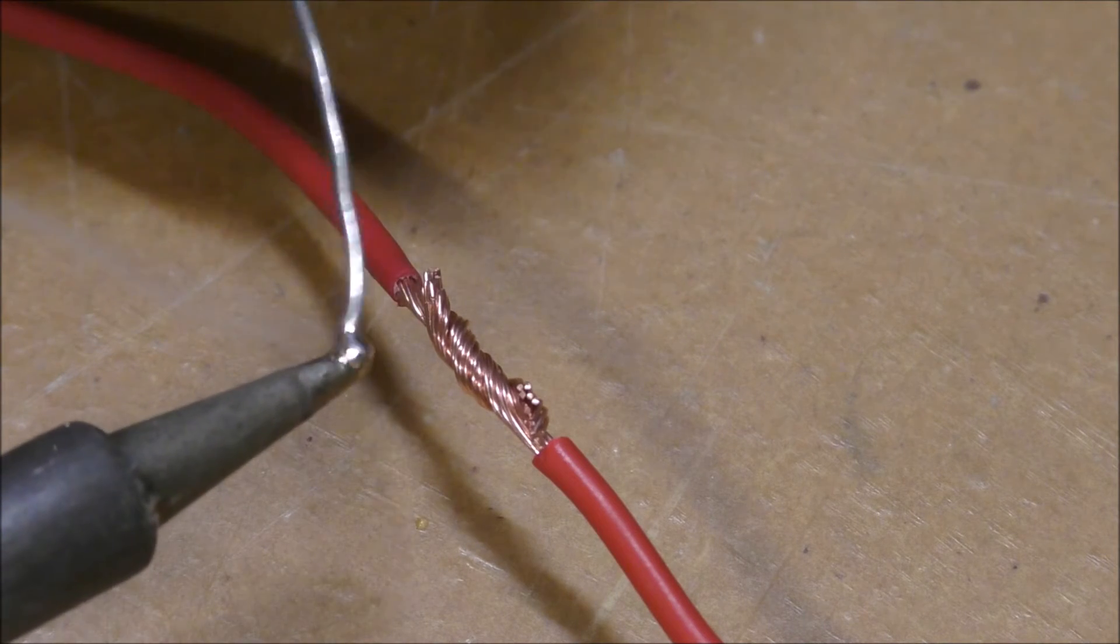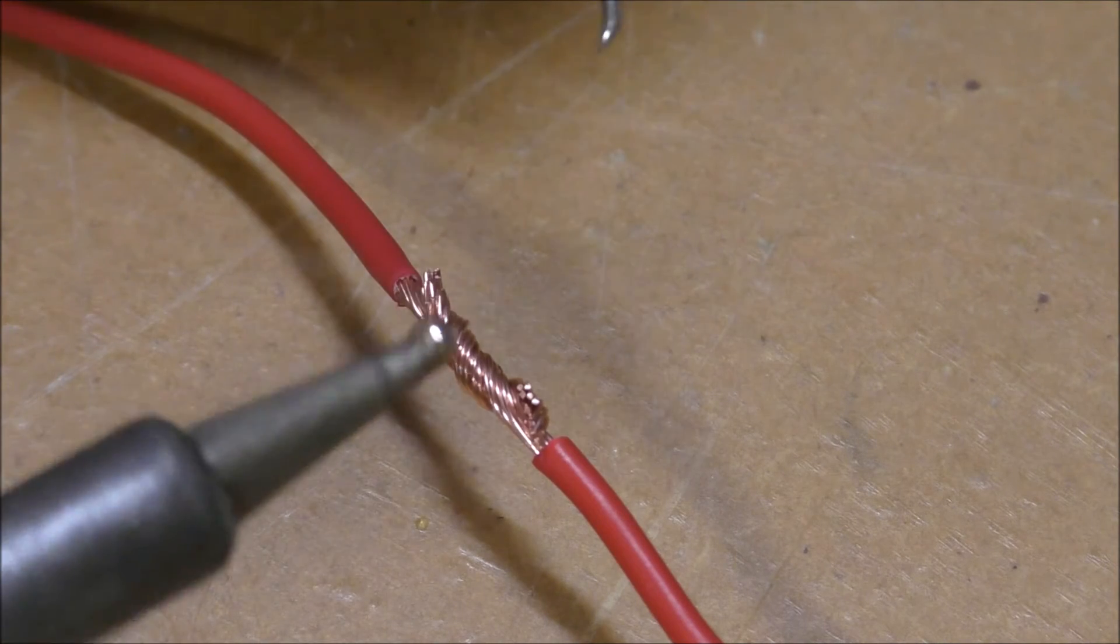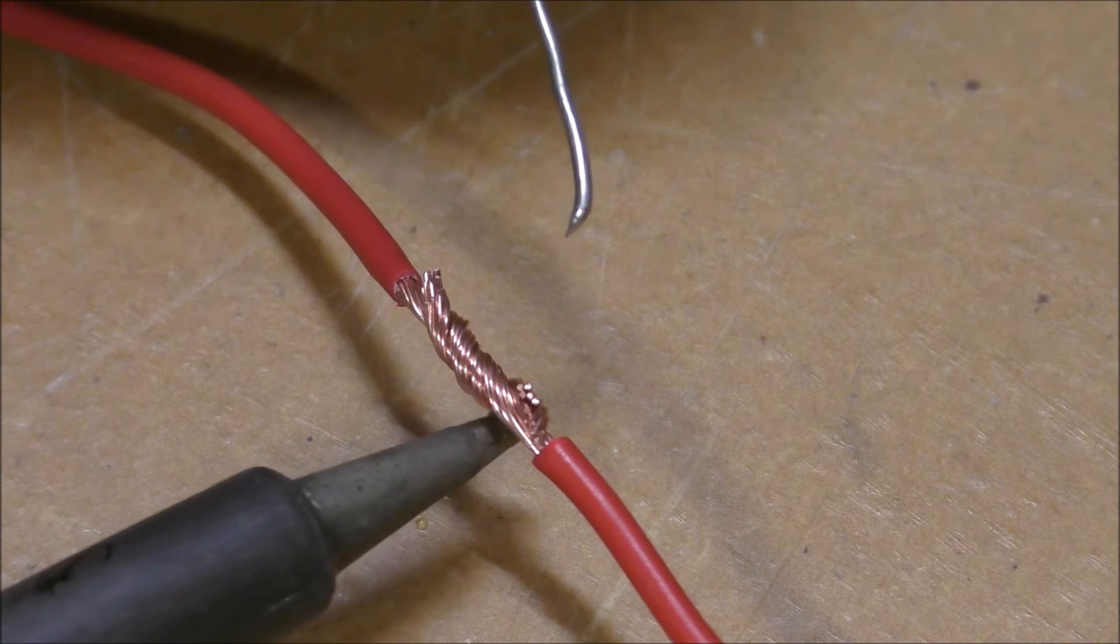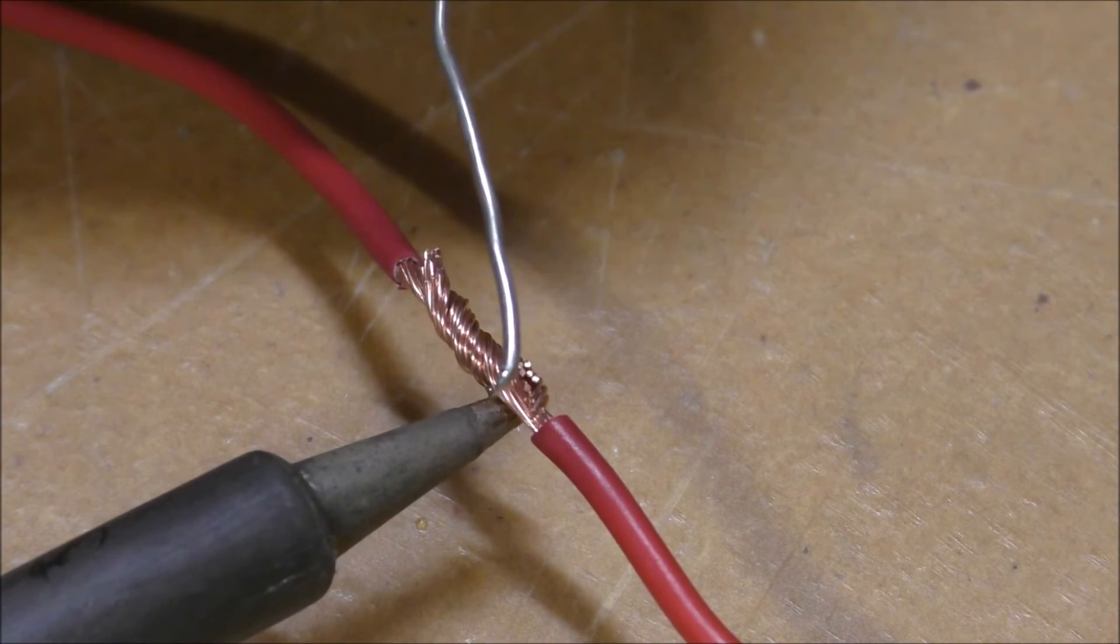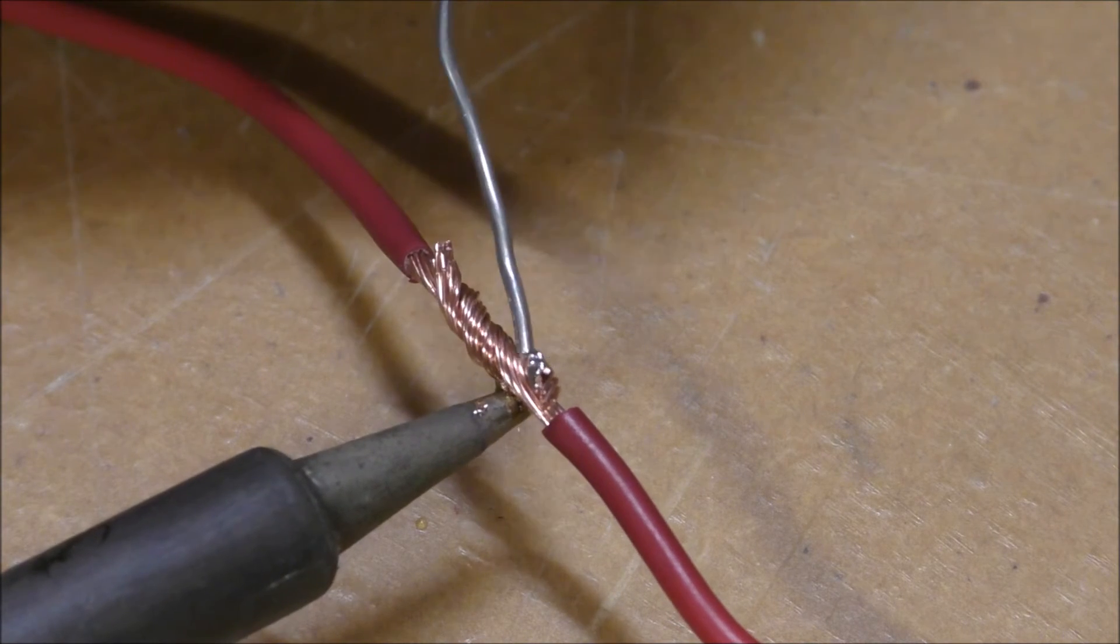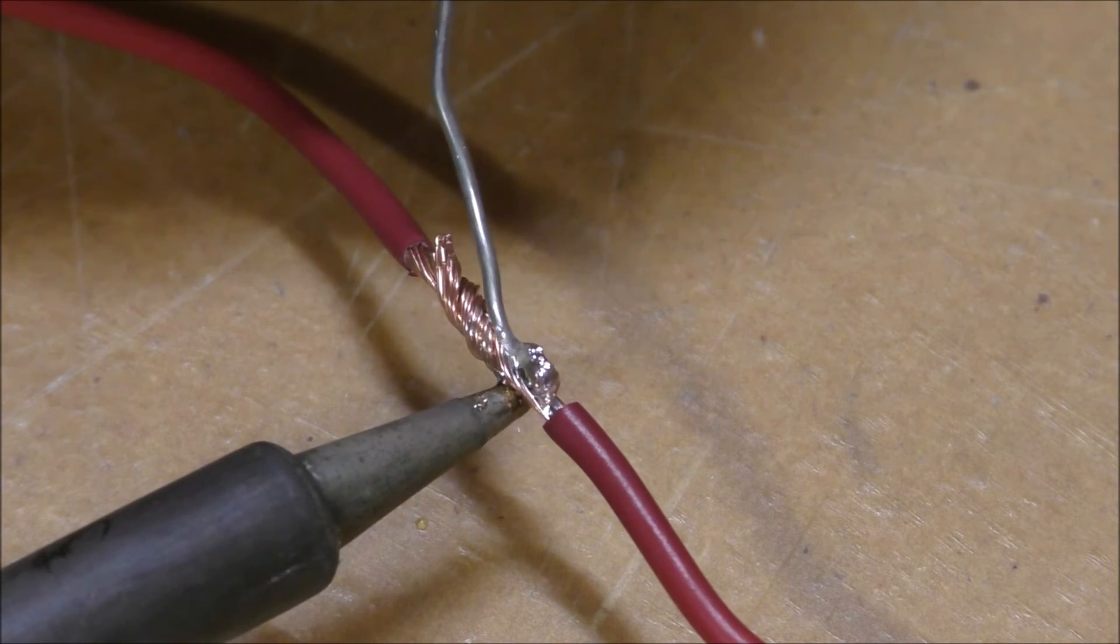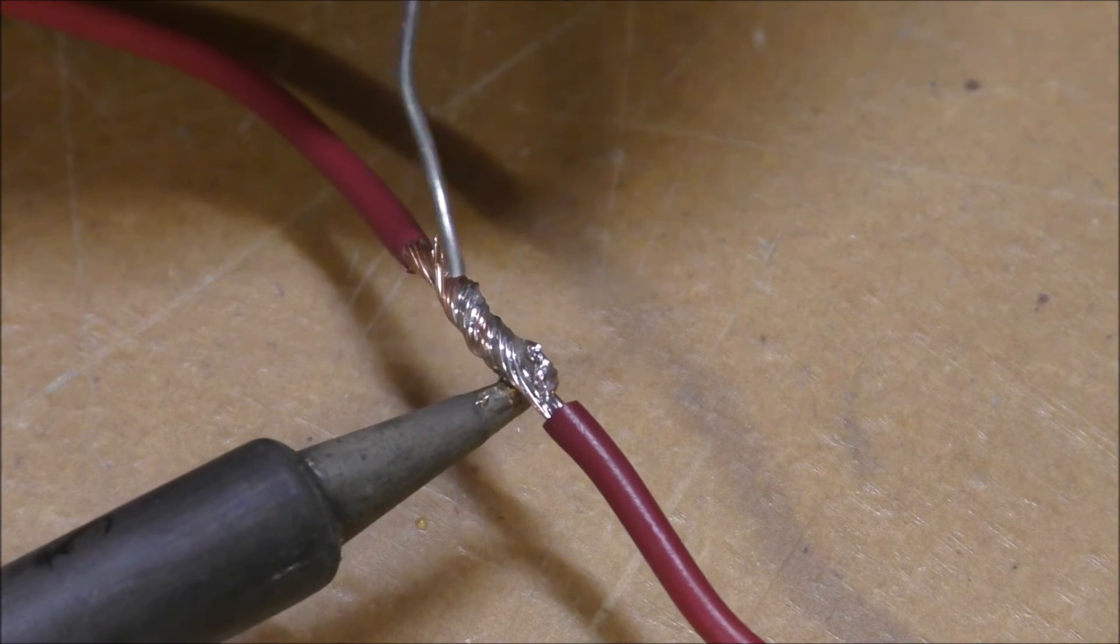Next we want to solder our connection. The key to soldering is heat. We need to heat the wire and then add the solder. It is not the other way around. Keep that key point in mind. Heat the job, then add the solder, and it will flow easily as it is in this instance.